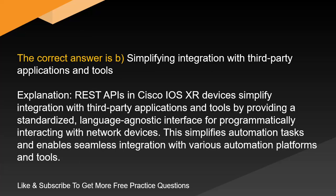The correct answer is B. Simplifying integration with third-party applications and tools. Explanation: REST APIs in Cisco IOS XR devices simplify integration with third-party applications and tools by providing a standardized, language-agnostic interface for programmatically interacting with network devices. This simplifies automation tasks and enables seamless integration with various automation platforms and tools.